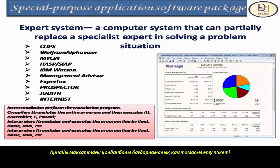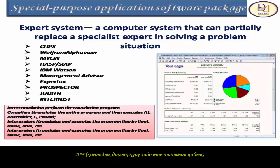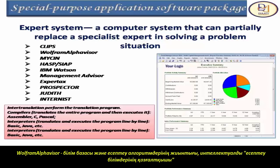Special Purpose Application Software Packets. An expert system is a computer system that can partly replace a specialist expert in solving a problem situation. CLIPS is a very popular shelf-building expert system in the public domain. Wolfram Alpha is a knowledge base and set of computational algorithms — an intelligent computational knowledge engine.